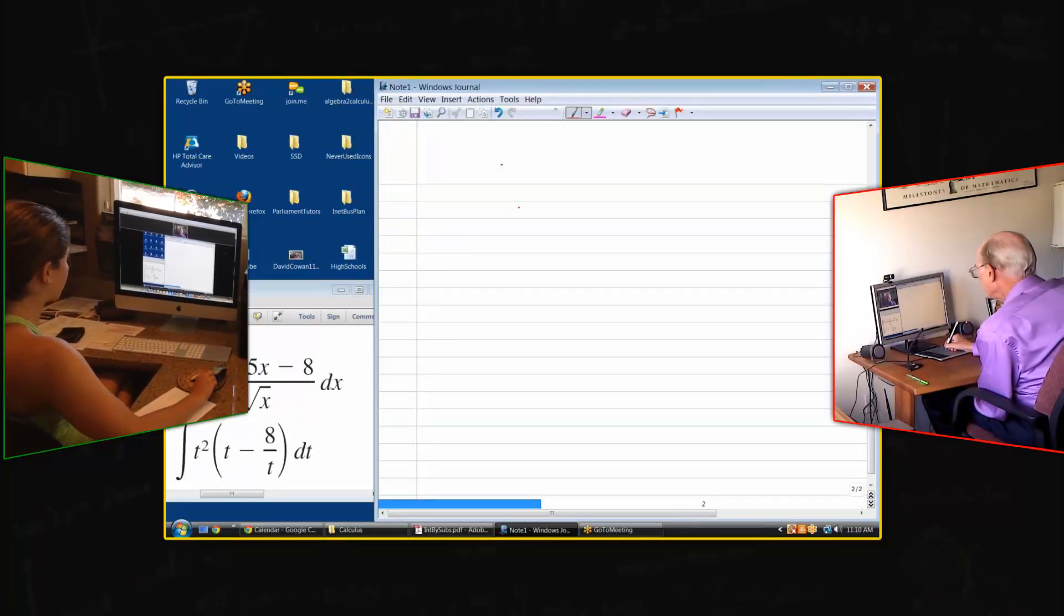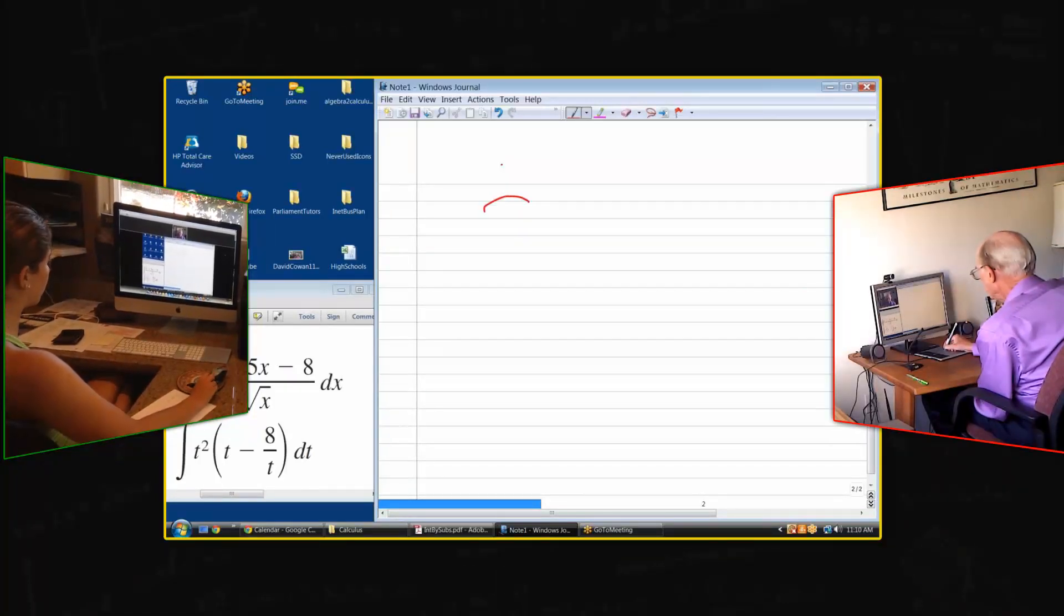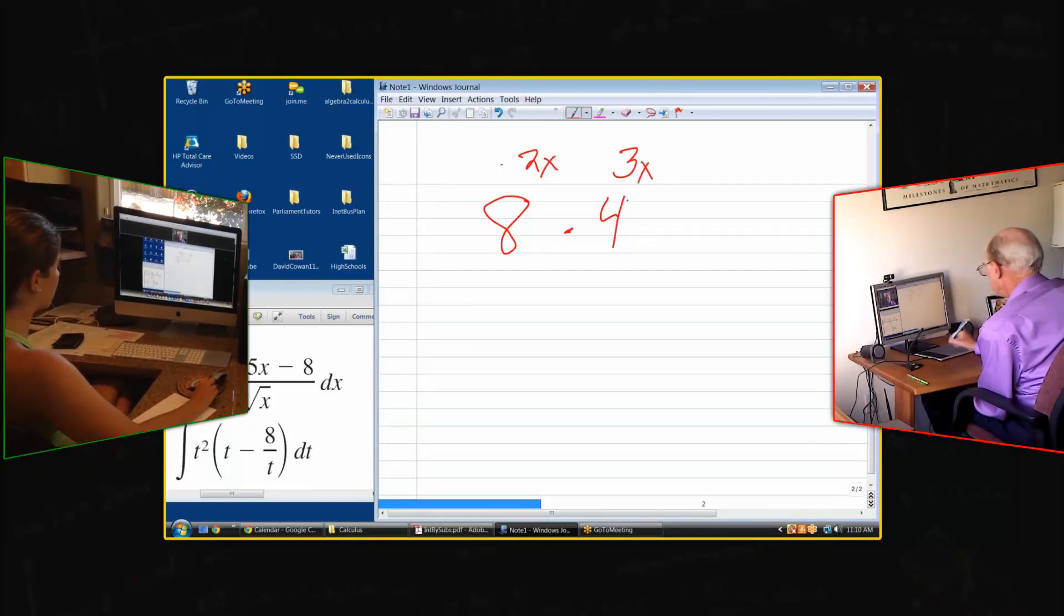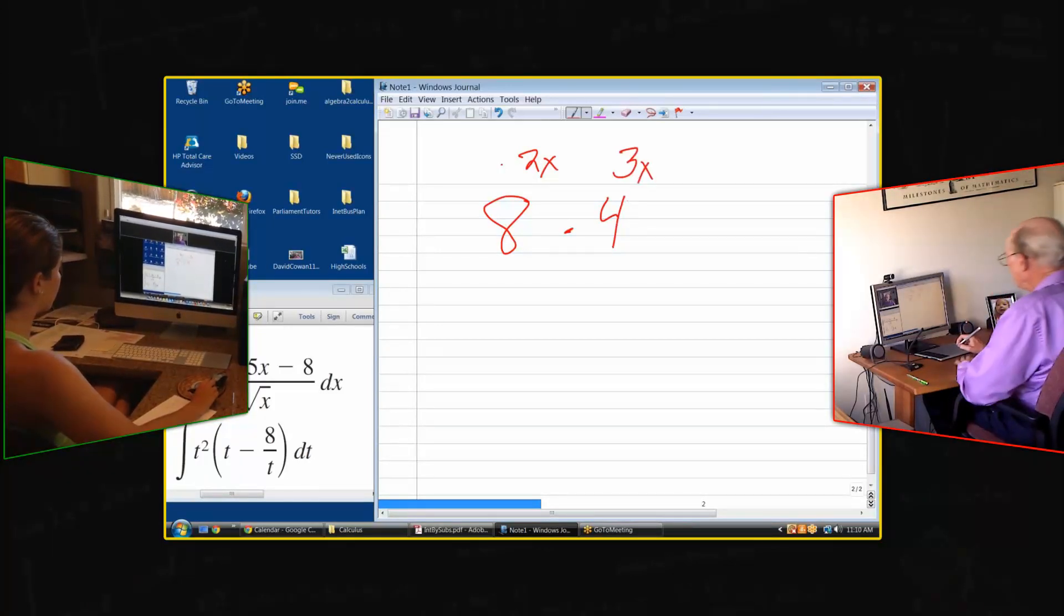For example, let's take the exponential expression 8 to the 2x times 4 to the 3x. How would we simplify that?